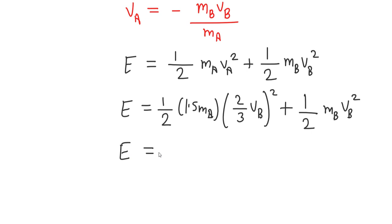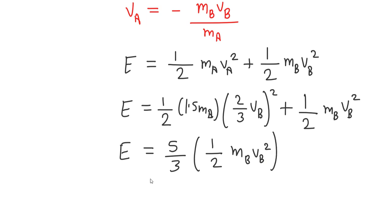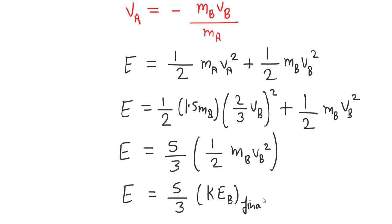Simplifying, we can write that E equals five-thirds times one-half m_b v_b squared, which means E equals five-thirds times the final kinetic energy of B.